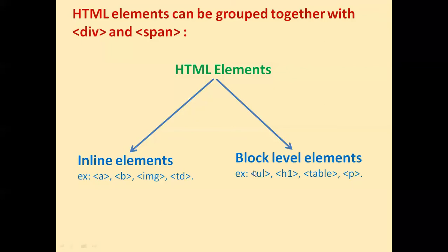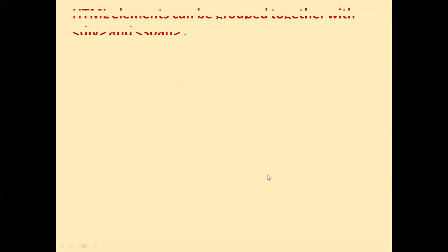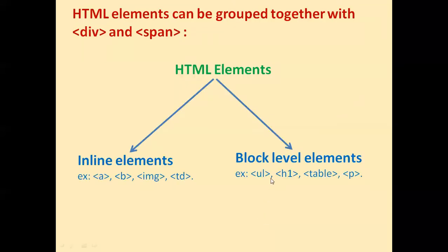But if we look at block level elements — ul tag, h1 tag, table tag, or p tag — if we use these tags in HTML, a line break will automatically be generated before and after the p tag, before and after the table tag, before and after the h1 tag, and also for ul and ol lists. A line break is generated before and after all block level elements.